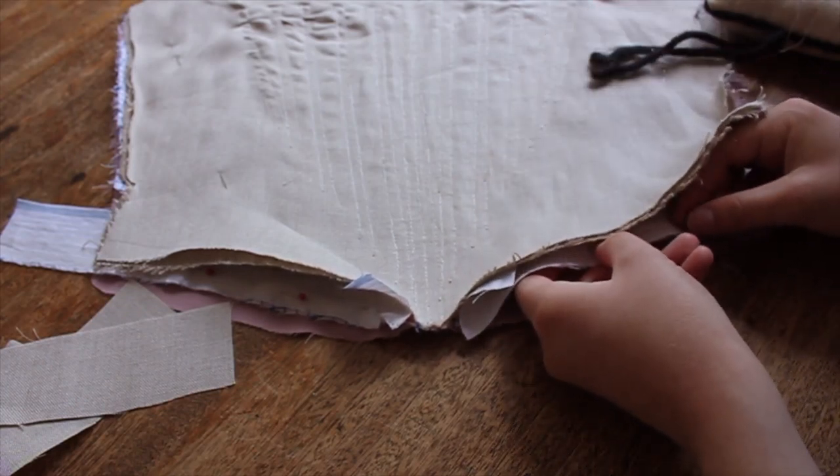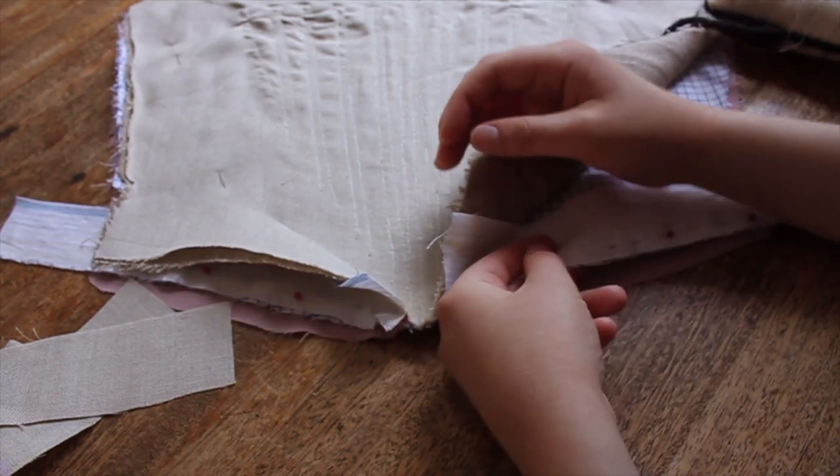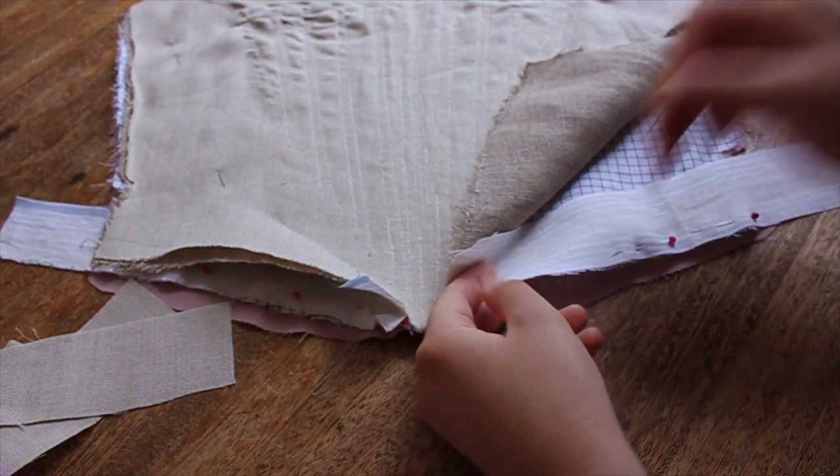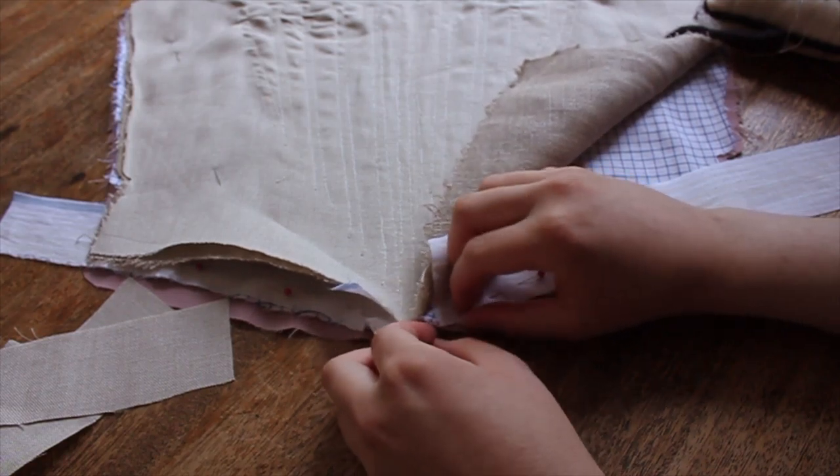As I was stitching the channels on the front panel, I realized that I had made a mistake in not cutting these stays with enough seam allowance. When I make stays, I usually like to cut them out with about an inch of seam allowance all the way around for ease of alteration.